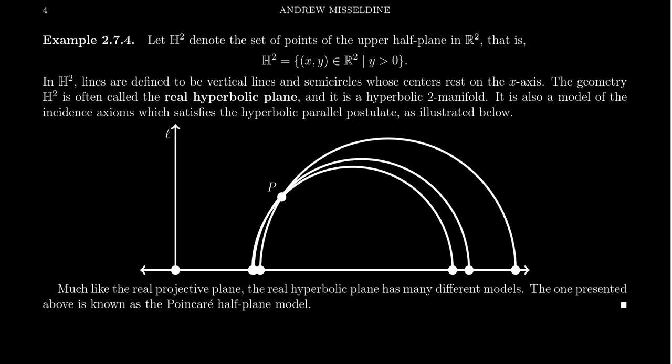So I want to explore the other parallel alternative, the so-called hyperbolic parallel postulate. The hyperbolic parallel postulate tells us that given a line and a point off the line, there's at least two parallel lines going through that point. Can we construct a manifold that satisfies that condition?